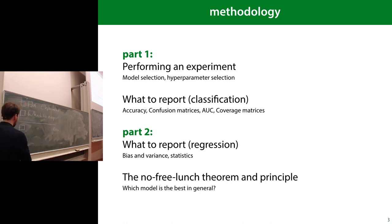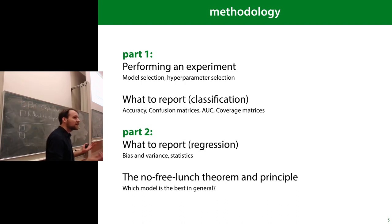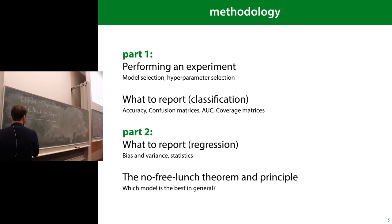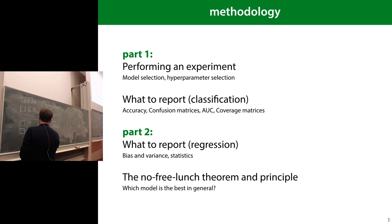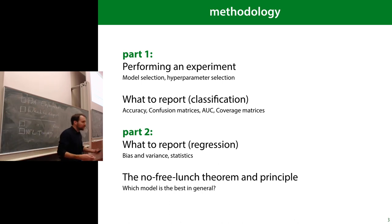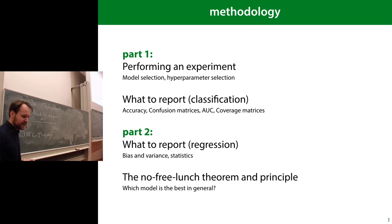Here's the plan. The first part: we'll start by looking at performing an experiment — what does that look like, how do we make sure results are reliable? Then we'll go into what exactly do we report: which numbers do we want to measure when talking about classifier performance? We'll do that for classification before the break and regression after. We'll also talk a little bit about statistics — confidence measures, p-values — whether we use them and how. And finally, if there's time, the No Free Lunch theorem: which machine learning method is best in general?